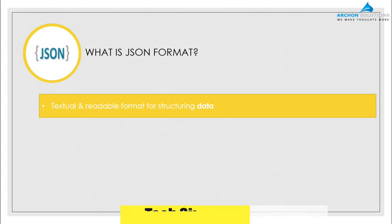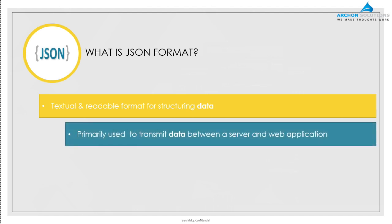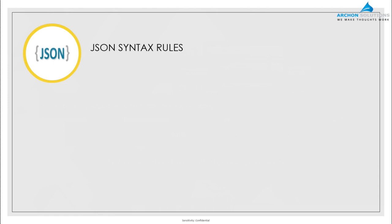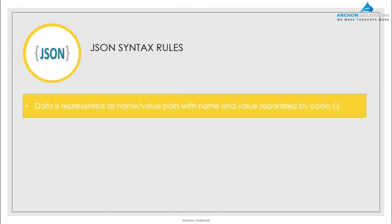JSON is very simple because it's a textual and readable format for structuring data. Primarily, JSON is used for transmitting data between a server and its web application. Data is stored and transmitted as simple name-value pairs — that's JSON format.